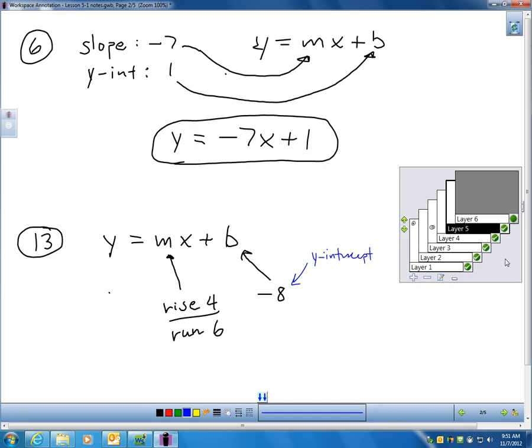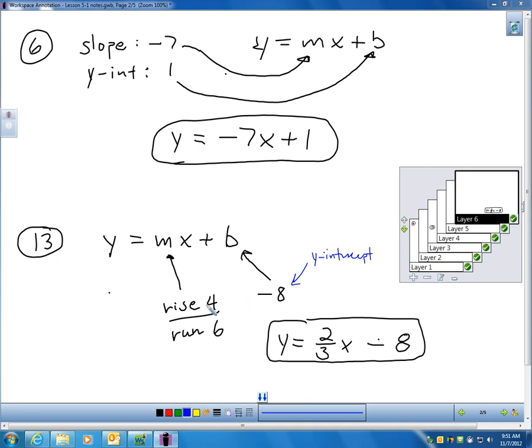Which means if I write an equation for this, I can write Y equals 2/3 X minus 8. You might be wondering, where did 2/3 come from? Well, remember, the fraction 4/6 in lowest terms is 2/3. And, yes, we would want to write that in lowest terms. So, the equation for this line is Y equals 2/3 X minus 8.